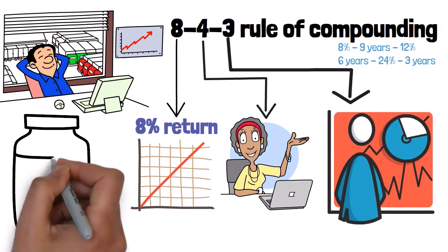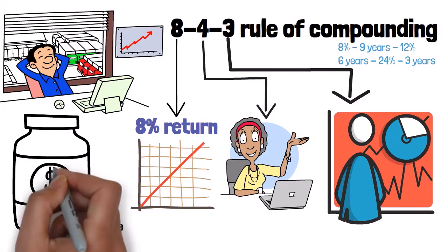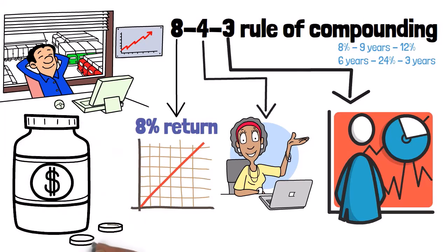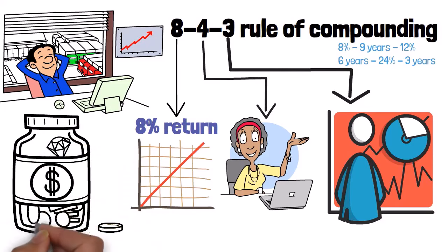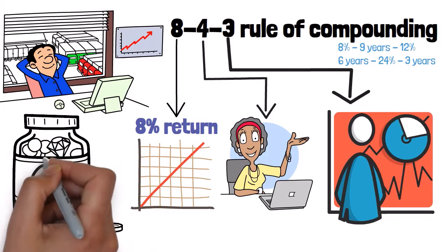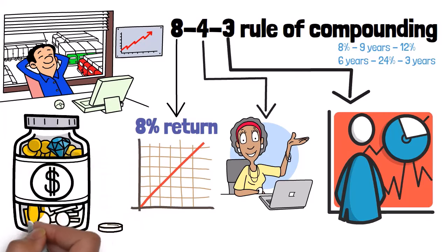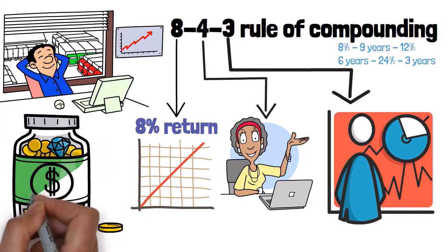Now I know what you're thinking, double your money in just 3 years? Sounds too good to be true, right? Well here's the thing, the power of compounding is real. When you reinvest your earnings and let them grow over time, your money has the potential to multiply exponentially.